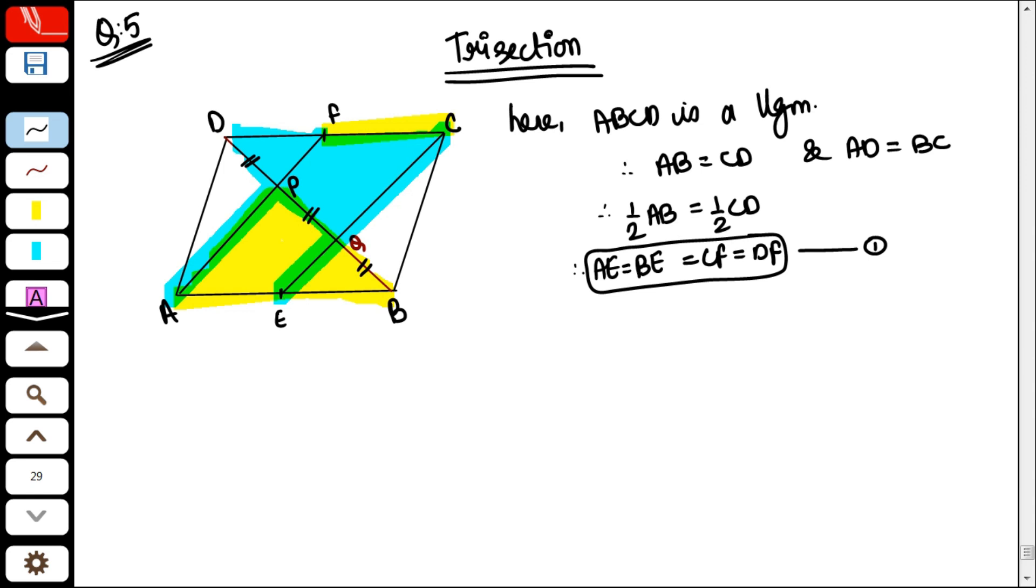P is the midpoint. So all three line segments are equal. Hence proved. Did you understand? Now what needs to be written, just focus on that.